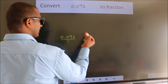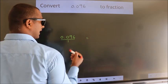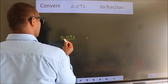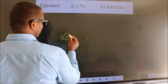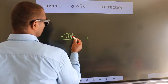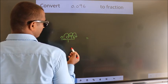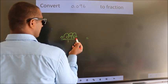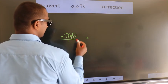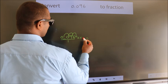To convert this to fraction, we have to move this decimal after 1, 2, 3 numbers. To move this decimal after 3 numbers, we should multiply it with 1000.